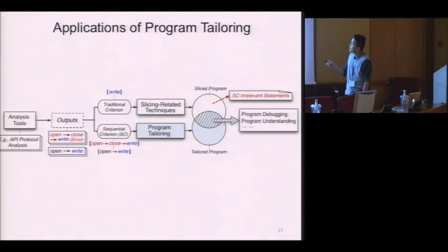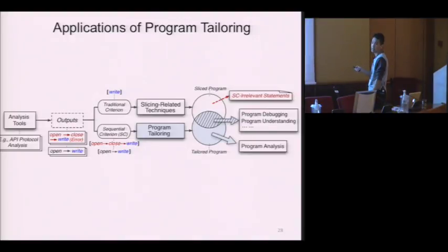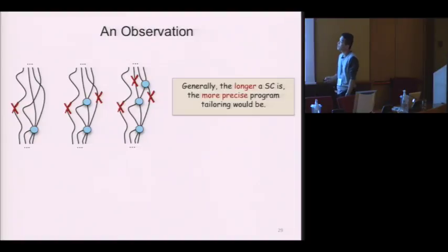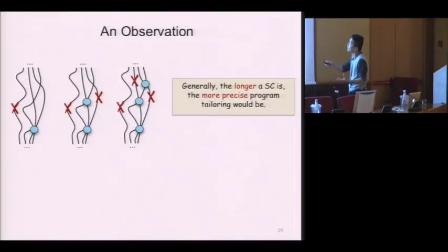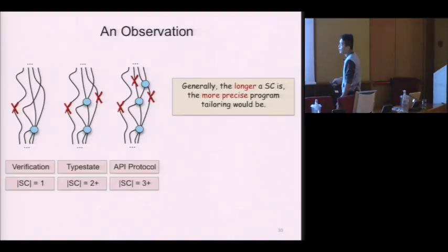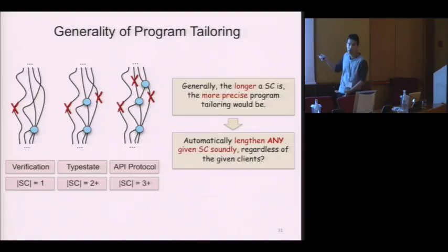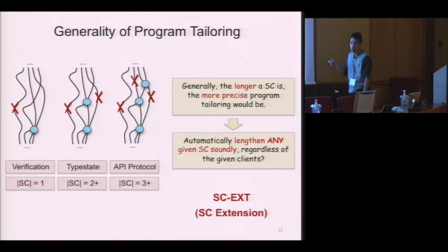In addition, due to the good scalability of program tailoring, it is also useful for program analysis tasks, which I will explain later. Some may find that the power of program tailoring is restricted by the given sequential criteria. In fact, generally the longer your sequential criteria is, the more precise program tailoring would be, because more irrelevant statements are removed. However, in practice different clients may generate SC with different lengths. To improve generality, can we design a method that can automatically lengthen any given sequential criteria to improve the precision of program tailoring? The answer is yes — we designed a method called IC extension to achieve this goal.